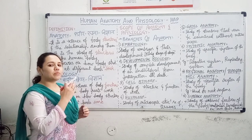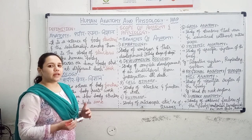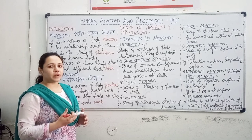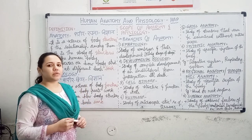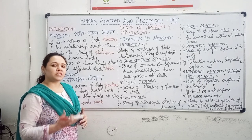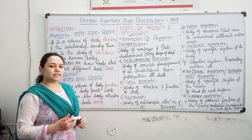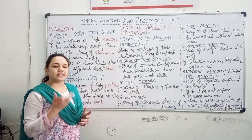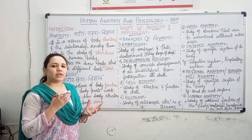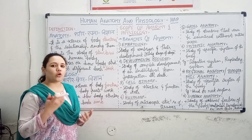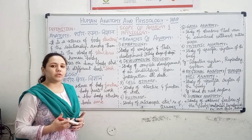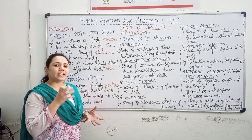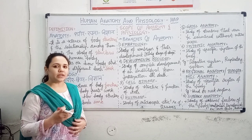In Anatomy, we study how a particular part looks and what structures it contains. For example, if we take the eye — what structures are present in the eye? There is the cornea, lens, pupil, and conjunctiva. Studying all these structures comes under anatomy.